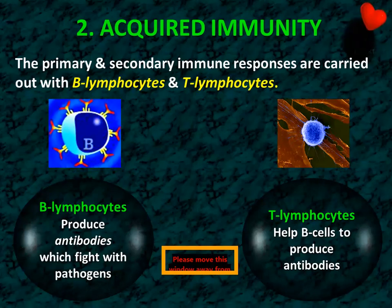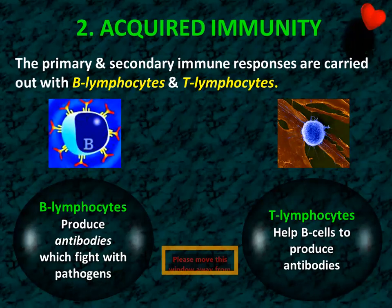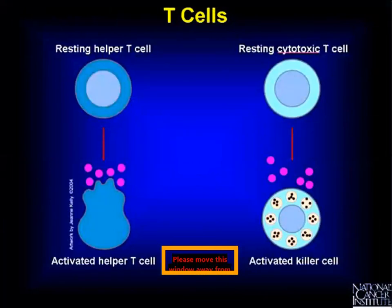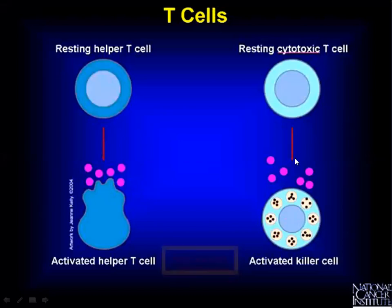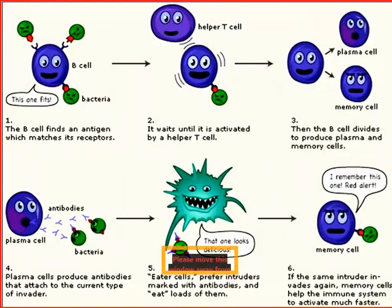The primary and secondary immune responses are carried out with two types of lymphocytes — T and B lymphocytes. Acquired memory comes with these two types of cells. T lymphocytes help B cells produce antibodies, particularly through T helper cells. B lymphocytes produce antibodies which fight the pathogen. When T cytotoxic cells are activated, they kill the pathogen themselves — we call this cell-mediated immunity.